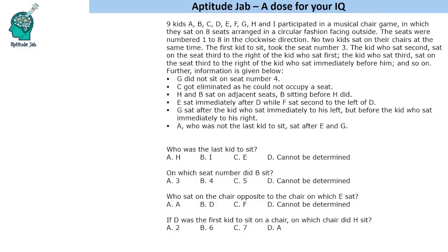There are 9 kids A, B, C, D, E, F, G, H, I. They participated in a musical chair game and sat on 8 seats numbered 1 to 8 in the clockwise direction. That means 8 people were able to sit and 1 person could not sit. No 2 kids sat on the chairs at the same time, so they have a different order of sitting — first person sits, then second, then third, and so on.